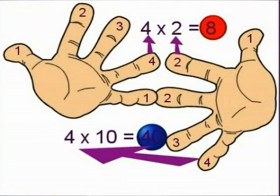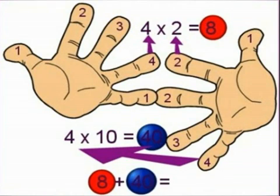We now add those two answers together, shown here in the red circle and the blue circle. Eight plus forty equals forty-eight. So six eights are forty-eight.